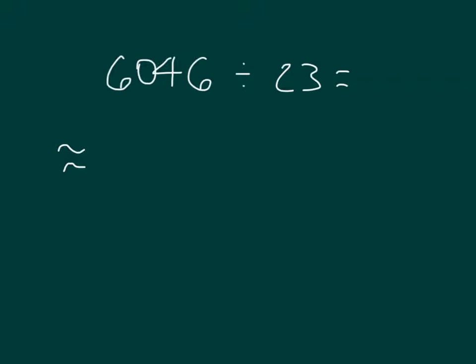We'll go ahead and look at the divisor and round the divisor first. And so we have 23 there, which is closest to 20.